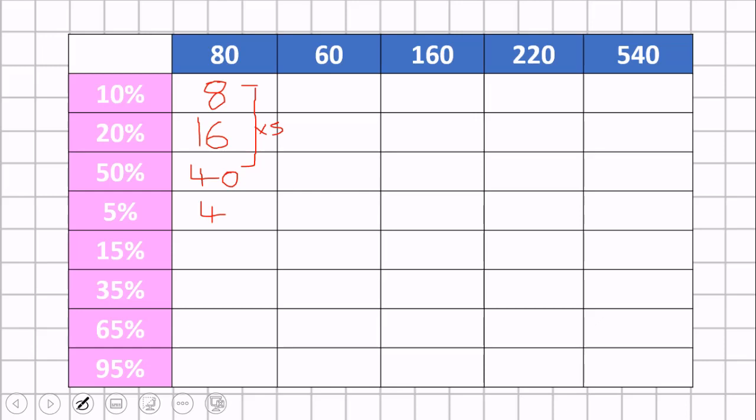5%, we know 10% is 8, so what we need to do is just divide this by 2. So half of 8 is 4. Now to work out what 15% is, the quickest way to do it is to get your 10%, get your 5%, and this will make 15, so you do 8, add 4, and then that will equal 12. So you add your 10% and your 5%, which will give you 12.